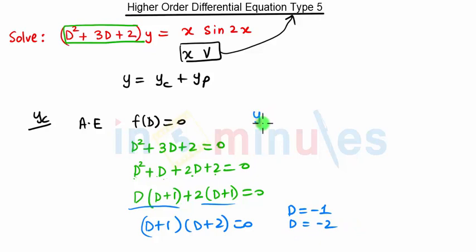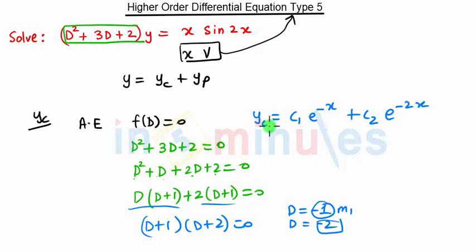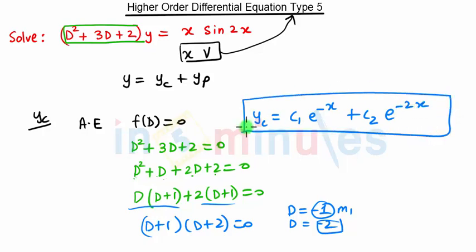Then the solution of Y_C is given by C₁ e raised to M₁·X plus C₂ e raised to M₂·X. Our M₁ is minus 1 and M₂ is minus 2, so Y_C equals C₁ e raised to minus X plus C₂ e raised to minus 2X. This is the solution of Y_C, which is very simple. Now we will find Y_P.